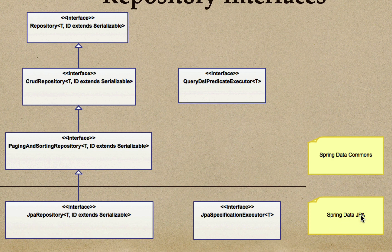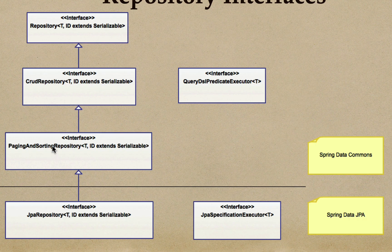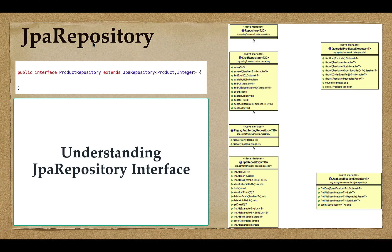Since Spring Data JPA extends Spring Data Commons, JpaRepository from the Spring Data JPA module extends PagingAndSortingRepository from the Spring Data Commons module. So the hierarchy looks like: JpaRepository extends PagingAndSortingRepository, which internally extends CrudRepository, which internally extends Repository. This is how the repository interfaces relationship looks like.